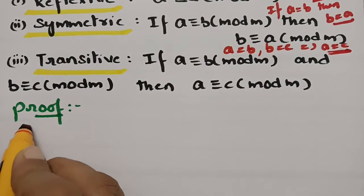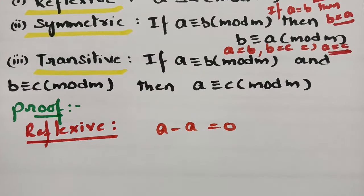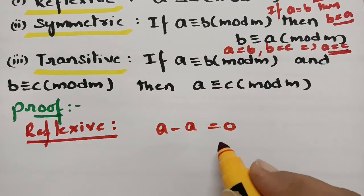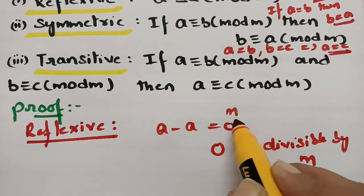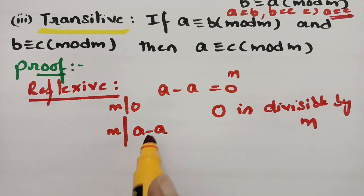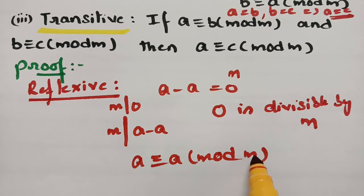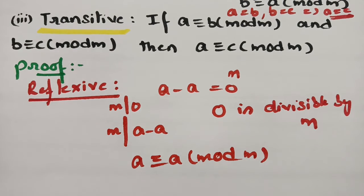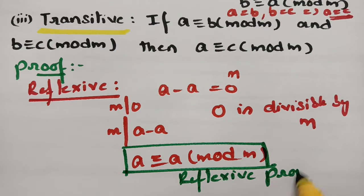For the proof, first we show the reflexive property. Clearly, A minus A equals 0, and 0 is divisible by M. So M divides A minus A. By the congruence definition, since M divides A minus A, we can write A ≡ A (mod M). Therefore, the reflexive property holds.